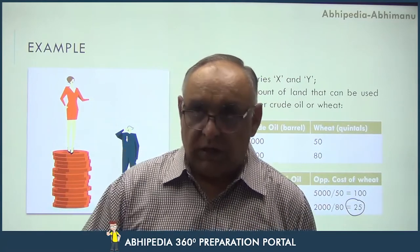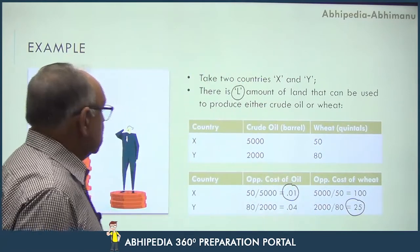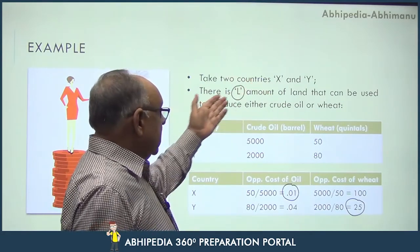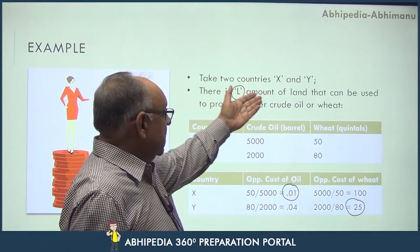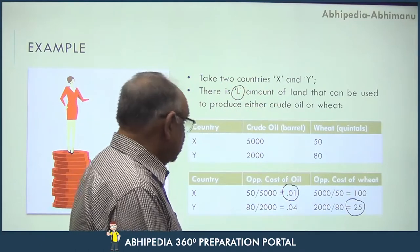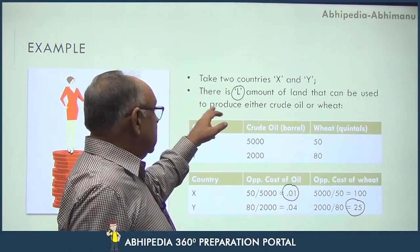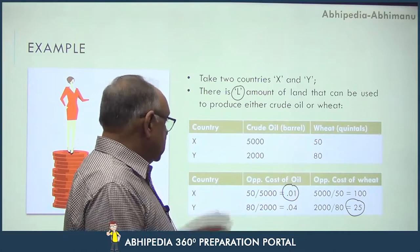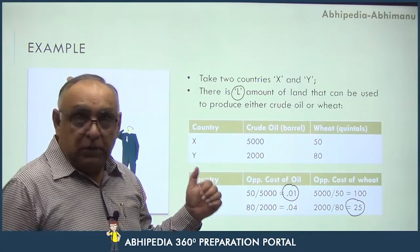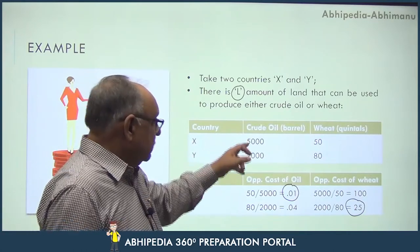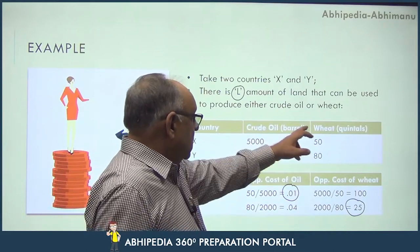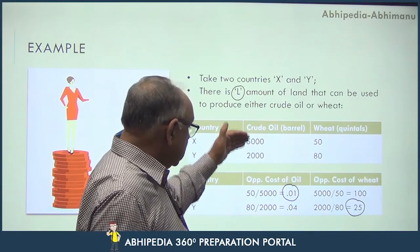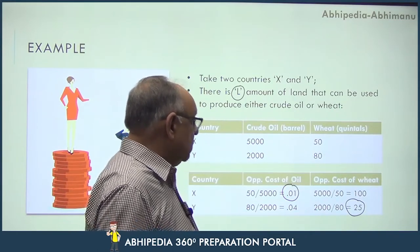Let me start with an example. We take two countries, X and Y. Let's suppose both countries have the same amount of land under consideration, and that land can be used for the production of either crude oil or wheat. Country X may produce 5000 barrels of crude oil or 50 quintals of wheat, and Country Y may produce 2000 barrels of crude oil or 80 quintals of wheat.